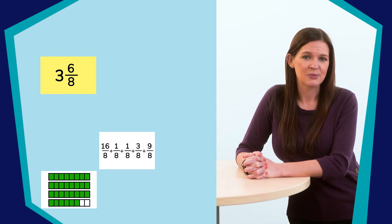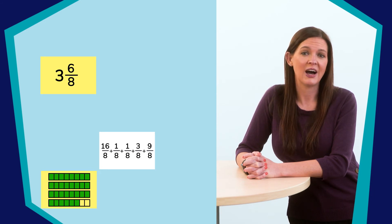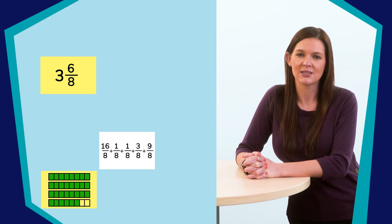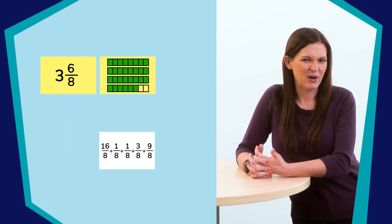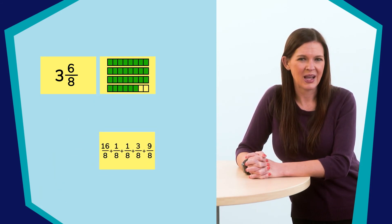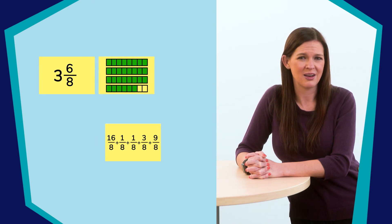So, three and six-eighths. This model shows four length models divided into eighths, and three of them are completely filled in. The last one has six pieces filled, so that represents six-eighths. This looks like the correct model. Now, this expression looks different. I may need the model to help me with this decomposition.